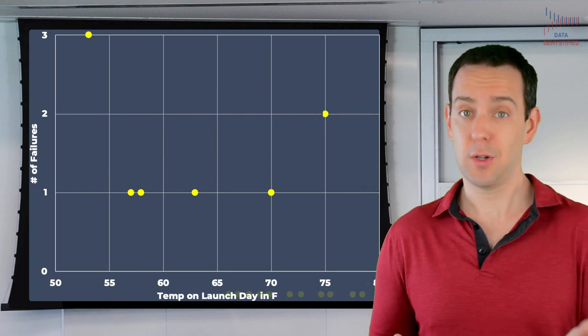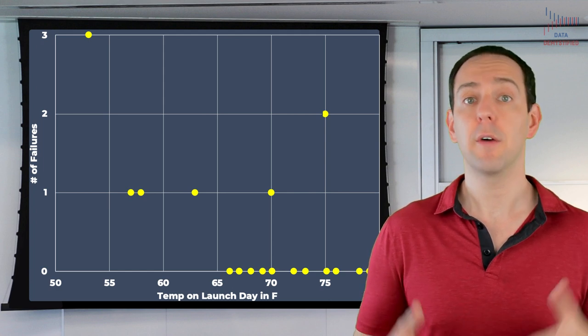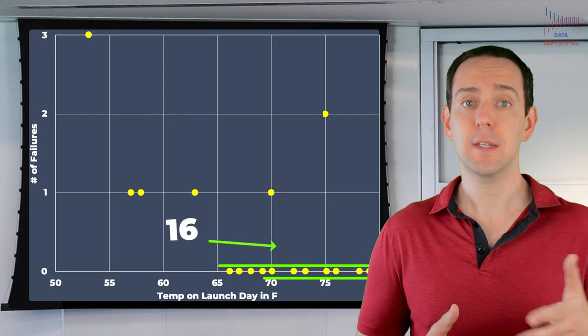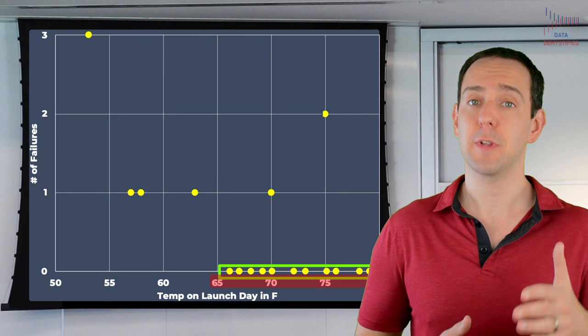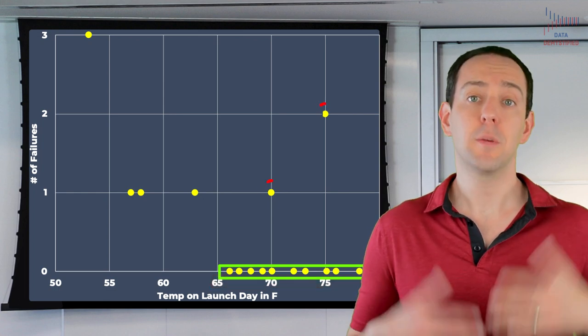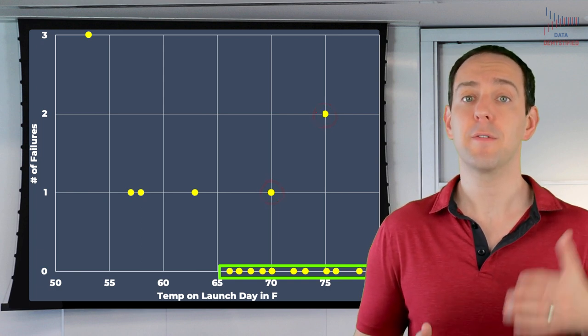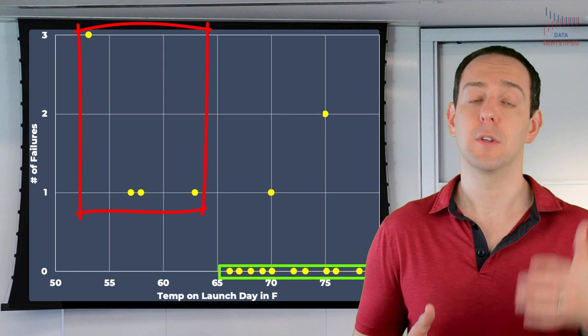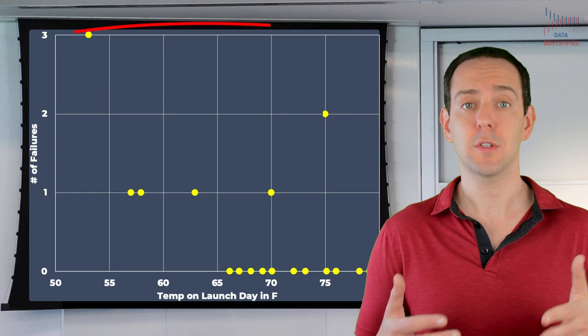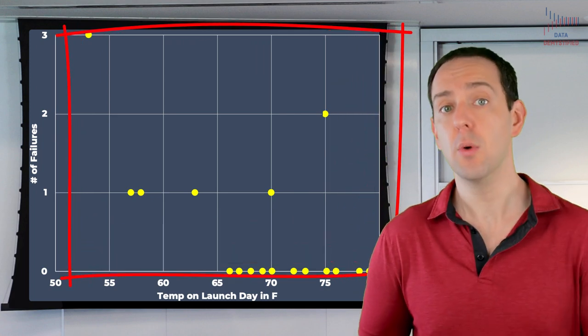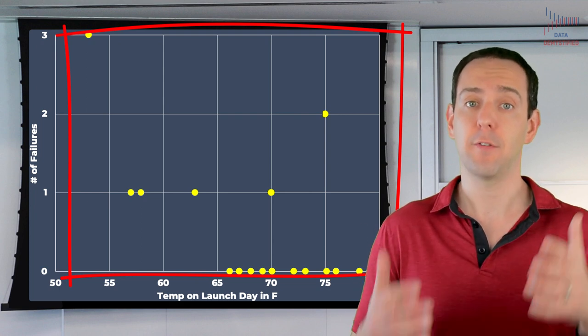When we instead include all launches, we get a very different picture of how temperature and failure are related. Of the 23 shuttle launches prior to this disaster, 16 of them had absolutely no issues when it comes to O-rings. And in all of those cases, the launches took place on days where the temperature was relatively high. To be sure, there were a few higher temperature launches that also had some form of O-ring failures, but of the seven launches that had a failure, most occurred during low temperature launches. In other words, when looking at all the data, launches that had any kind of O-ring failures and launches with no O-ring failures, the data tell a very different story about the relationship between temperature and failure rates.